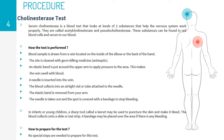Procedure. Sample required: blood. Process: 1. An elastic band is wrapped around the arm, 3-4 inches above the collection site, at the superficial vein that lies within the elbow pit. 2. The site is cleaned with germ-killing medicine, antiseptic. 3. A needle is inserted into the vein. 4. The blood collects into an airtight vial or tube attached to the needle.